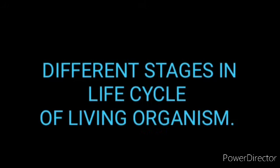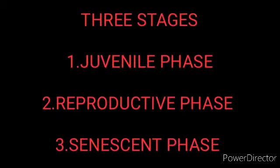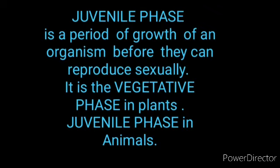We discussed the different stages in the life cycle of living organisms. There are three stages. The first is the juvenile phase — the period of growth of an organism before sexual reproduction, before maturity in animals.